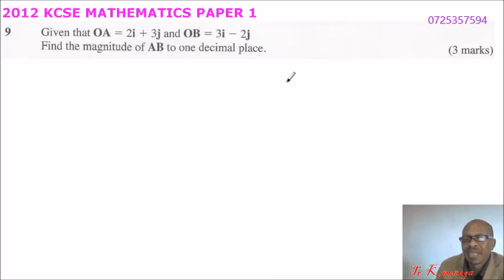This question is from vectors, which you covered in form 2, vectors 1, before you are introduced to vectors 2. So we need to know, OA is a position vector, OB is a position vector.